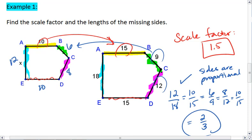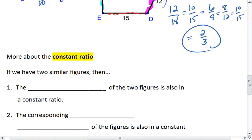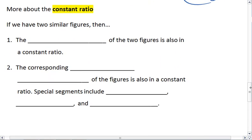We're in a constant ratio. Here's some more notes about that constant ratio. If we have two similar figures, then the perimeter of the two figures is also in a constant ratio, and it's in that same constant ratio.